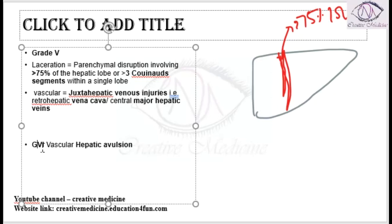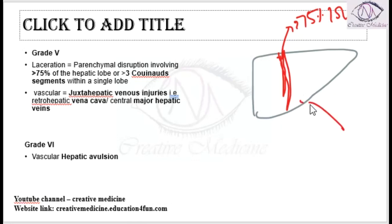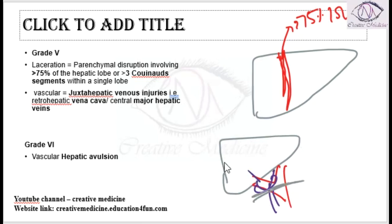In Grade 6, there is avulsion of the blood supply through the hepatic artery and the hepatic vein. So the liver has been avulsed from its vascular supply. That is Grade 6.